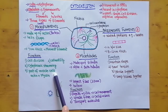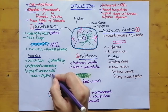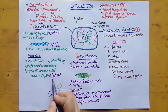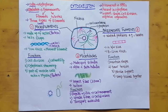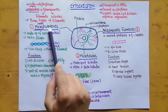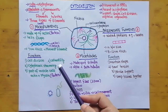Microfilaments are also part of muscle cells. In muscle cells, they combine with myosin, which is another protein. Together, actin and myosin work in the contraction and relaxation of muscles. Actin protein, present in the form of microfilaments, is essential when a muscle wants to relax or contract.